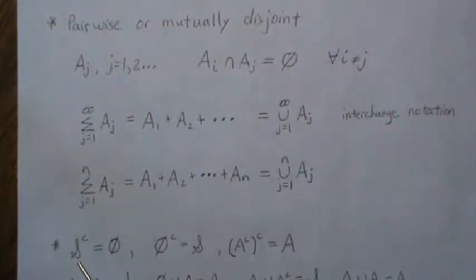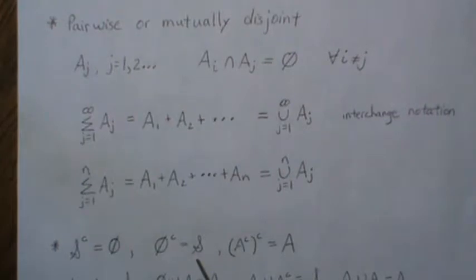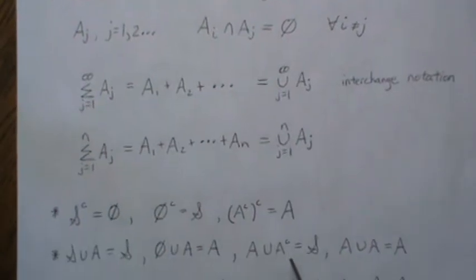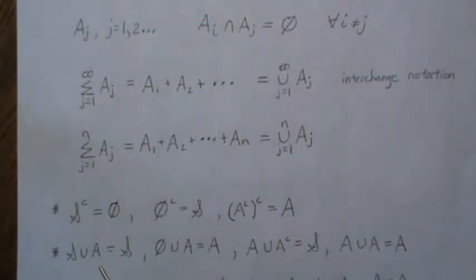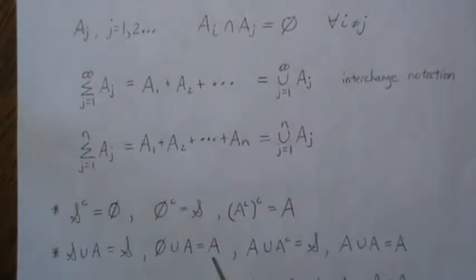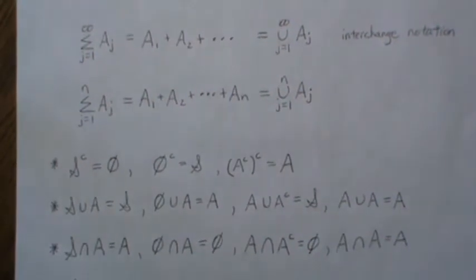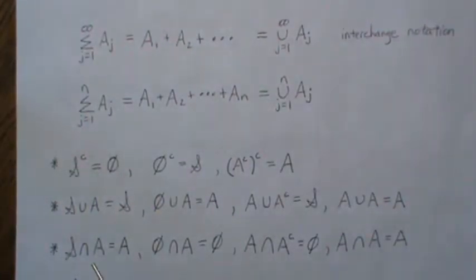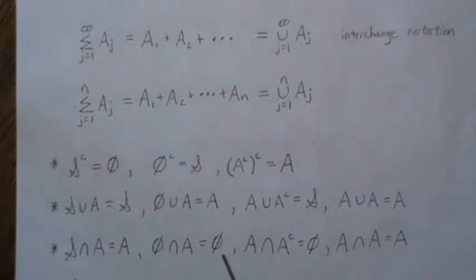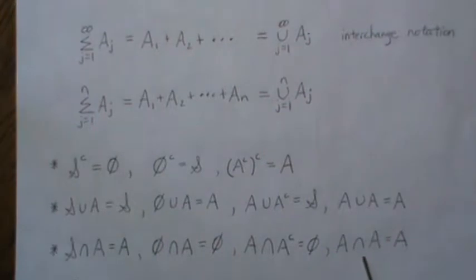The complement of our sample space or universal space is the empty set or null set. The complement of the null set is our sample space. The complement of the complement is A again. The sample space union any set in S gives the sample space back. The union with the null or empty set gives A back. A union A complement is the sample space. A union A is A. A and A complement are pairwise disjoint, so their intersection gives the empty set. A intersect A is A.